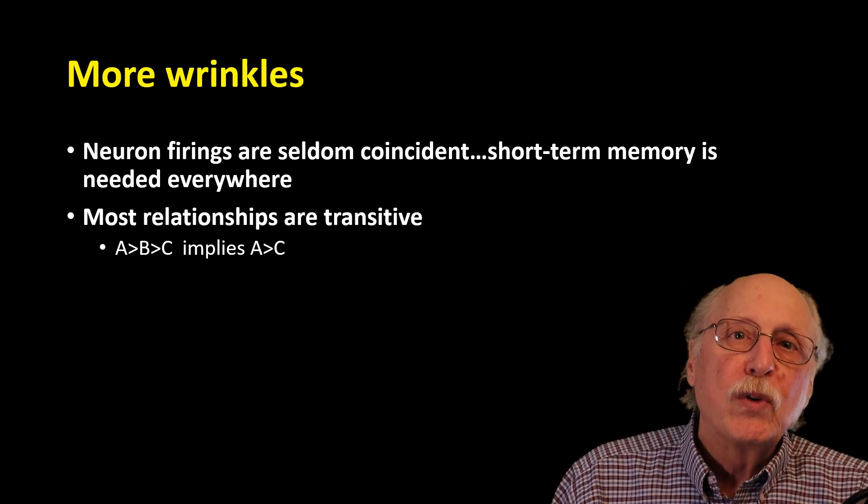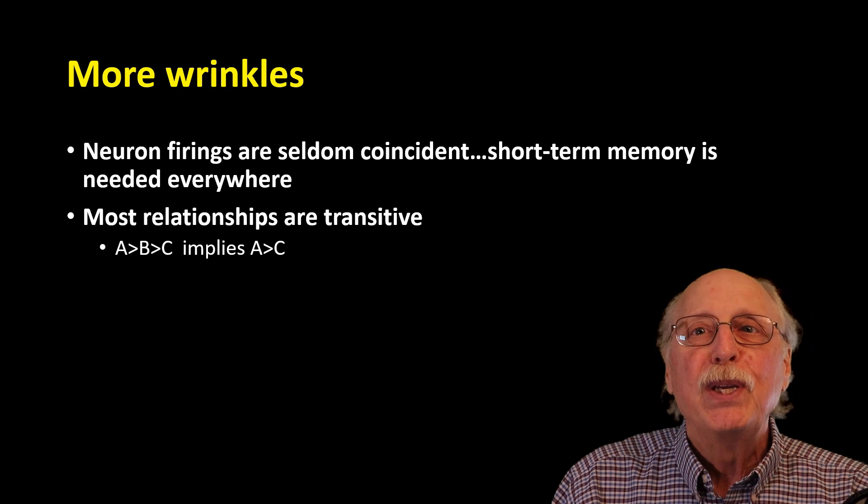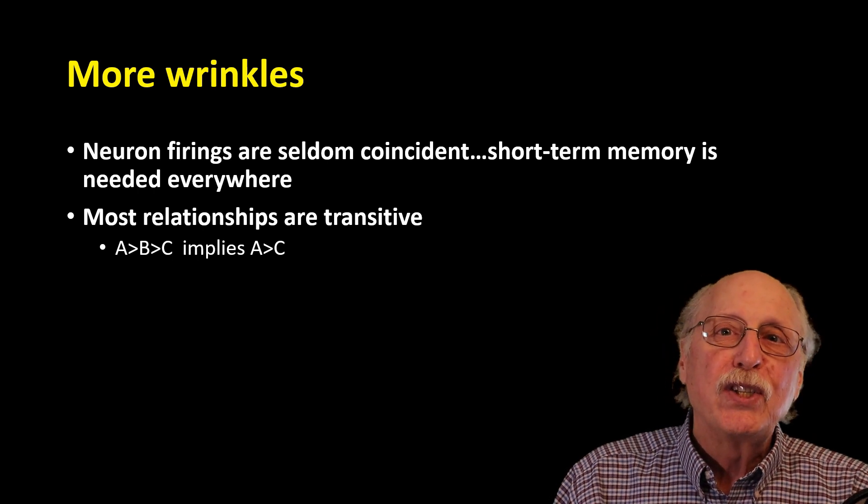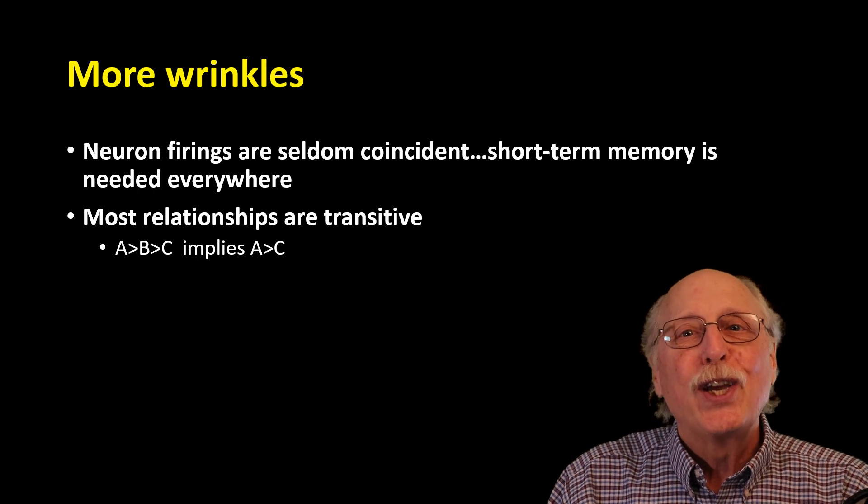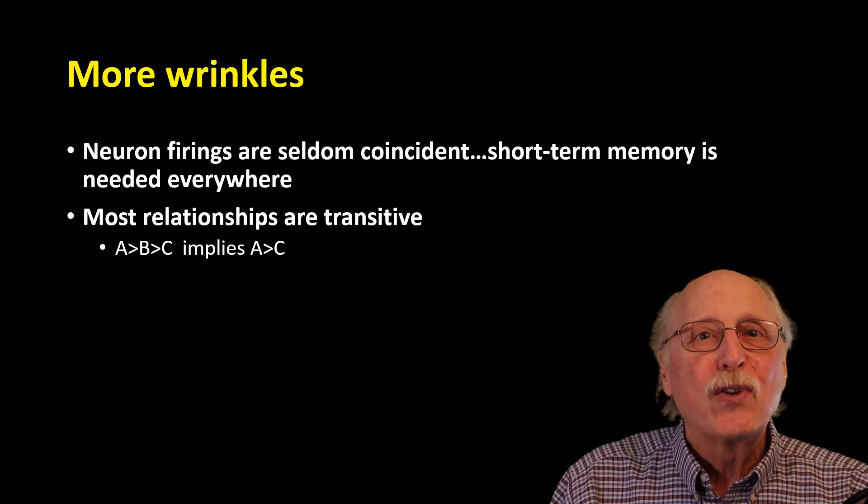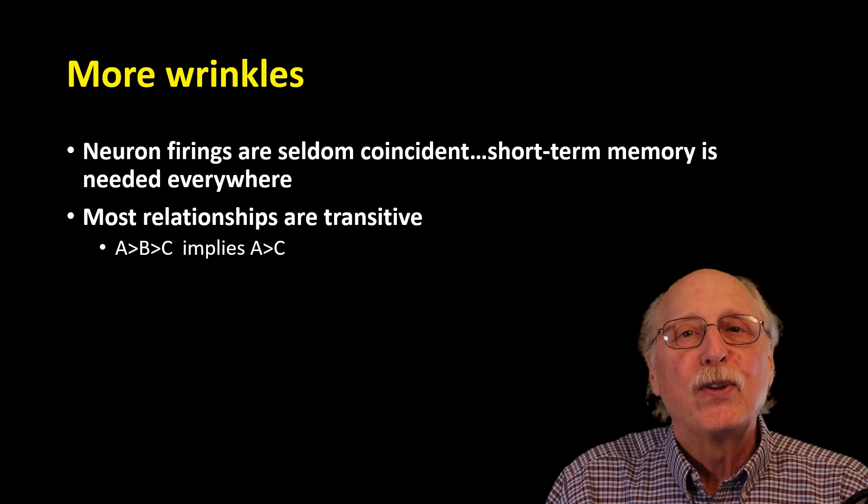We should also consider that most relationships are transitive. So if A is bigger than B, and B is bigger than C, then A is bigger than C. Fortunately, this is not difficult in neurons as I described as the recursion function in the video about the universal knowledge store.